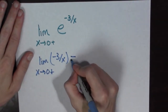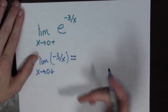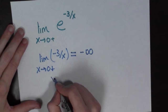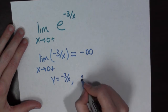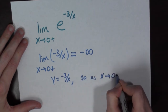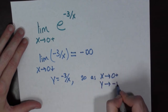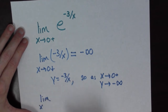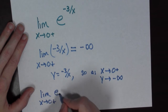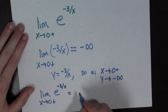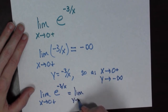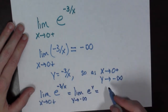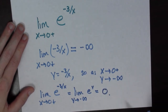In this case, x is positive and going to zero, and the numerator is negative, so this thing goes to minus infinity. Here's a little trick: I'm going to say y equals minus three over x. So as x goes to zero from the right, y goes to minus infinity. That means the limit as x goes to zero from the right of e to the minus three over x equals the limit as y goes to negative infinity of e to the y, which equals zero. Done!